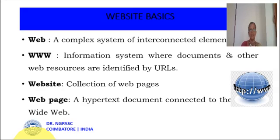The web is a complex system of interconnected elements. The World Wide Web is an information system where documents and other web resources are identified by URLs. A website is nothing but a collection of web pages, and a web page is a hypertext document connected to the worldwide web.